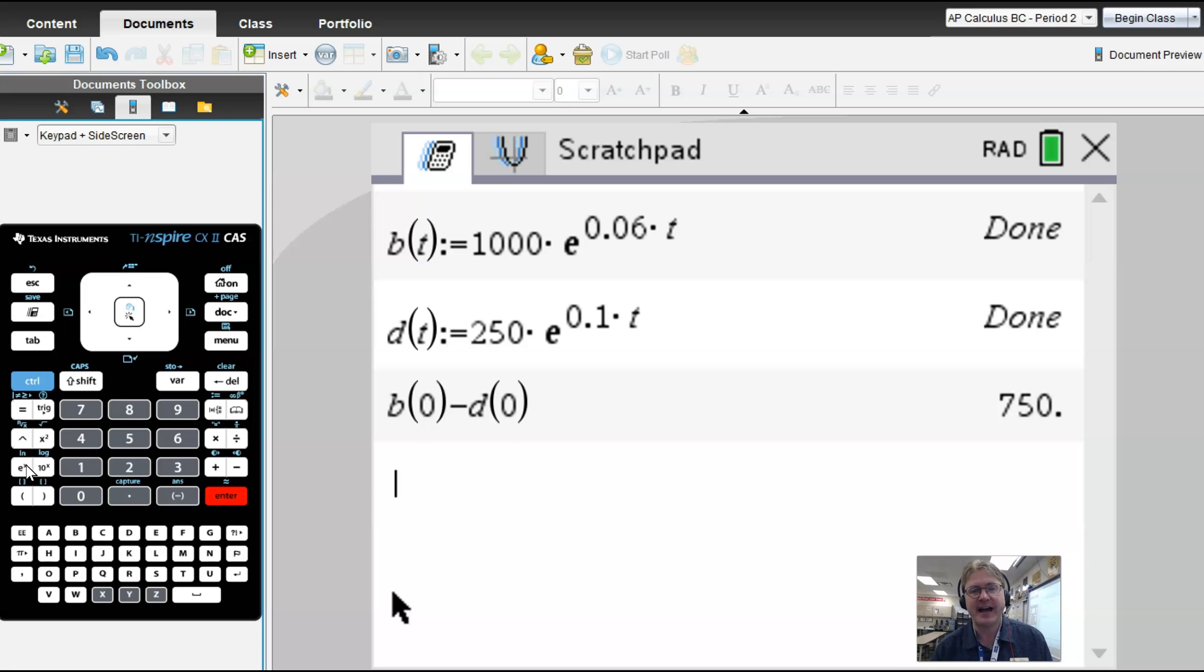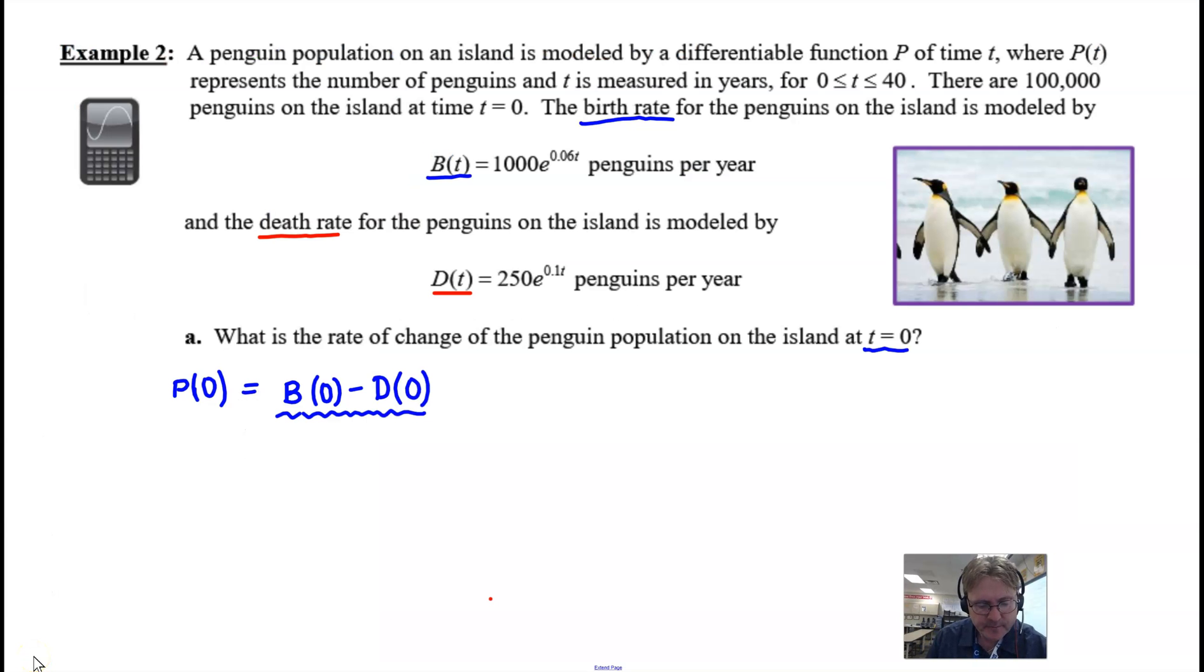Let's go ahead and return to our document and see how we can finally present this answer. So here we go. I'm happy to say that I can actually use an equal sign here because I know I don't have to round anything or truncate to get an approximation. And the only thing left to do is make sure that we include the correct units, because each of B and D were measured in penguins per year. When you subtract those, you would still get penguins per year.